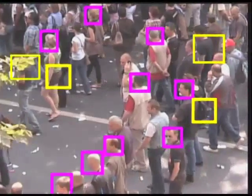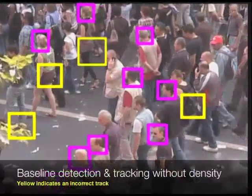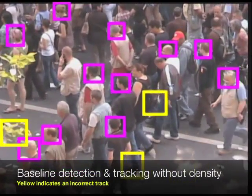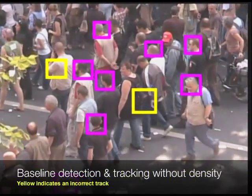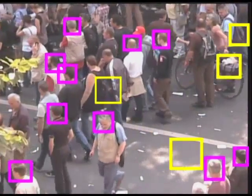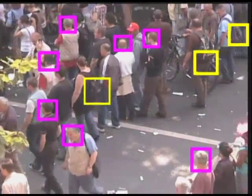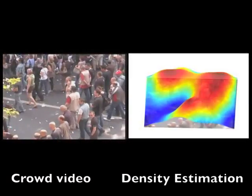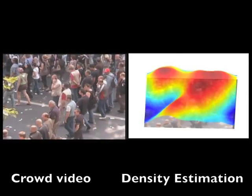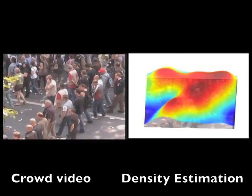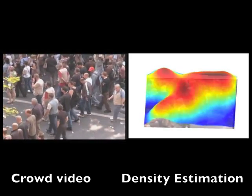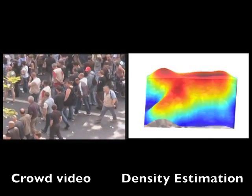An example of the challenges posed by crowds can be seen here, where we observe head detection and tracking results obtained using the current state-of-the-art part-based object detector. The density of a crowd provides us with an additional source of information which can be used to constrain the difficult problem of detecting and tracking people in crowded scenes.